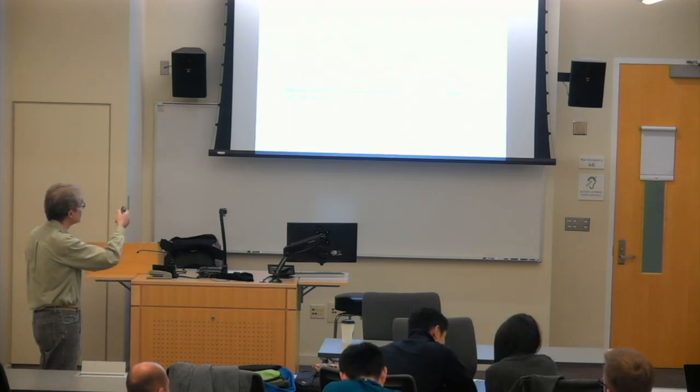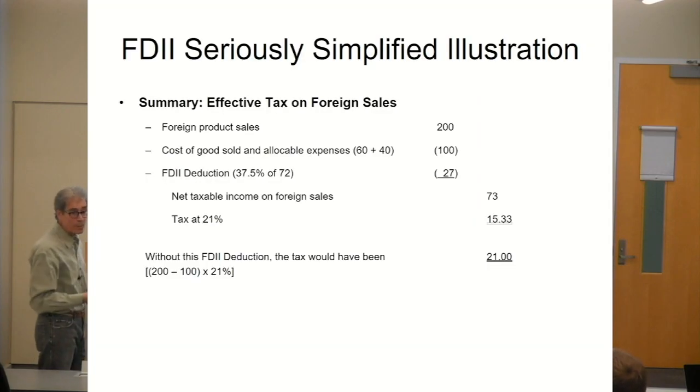Just to summarize that simple example we just talked about, the difference between 21, which would be the tax if there were no FDII deduction, the difference is roughly 5.67, the tax calculated using that FDII deduction.